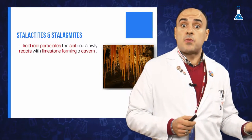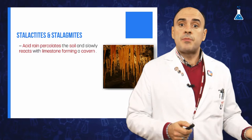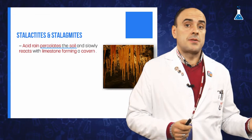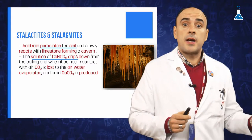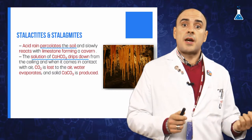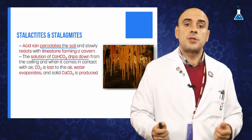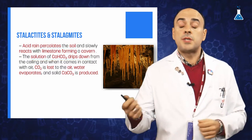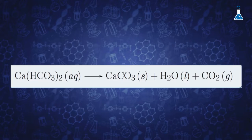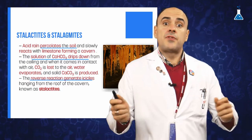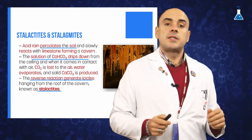This process is the cause of the formation of stalactites and stalagmites in caves where limestone is present. The water percolates the soil and reacts slowly with limestone along fractures, leaving cavities. The solution of calcium bicarbonate drips down from the ceiling of the cavern and some of the water evaporates, causing the compound to decompose back to solid calcium carbonate while releasing carbon dioxide. This reverse reaction generates icicles hanging from the roof of the cavern, known as stalactites.